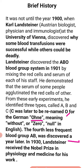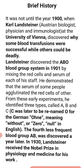The letter O came from the German word 'OHNE', meaning 'without' or 'zero' or 'null' in English — indicating that the O blood group has no A or B antigen, it is absent or nil. So A, B, C became A, B, O. The fourth blood group AB was discovered a year later. In 1930, Landsteiner received the Nobel Prize in Physiology and Medicine for his work.